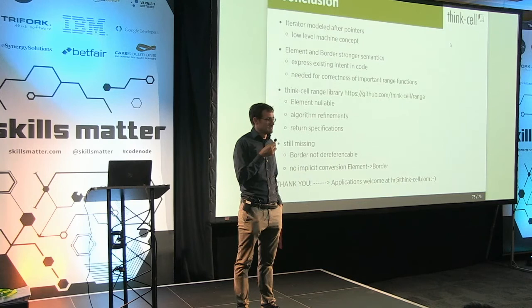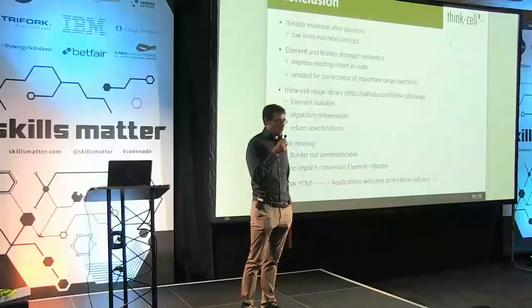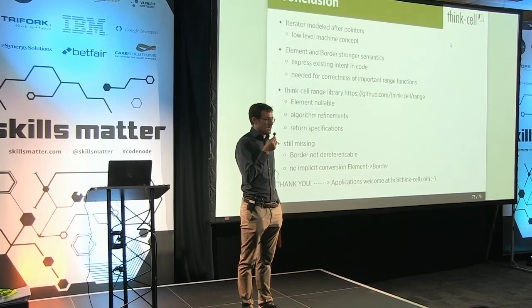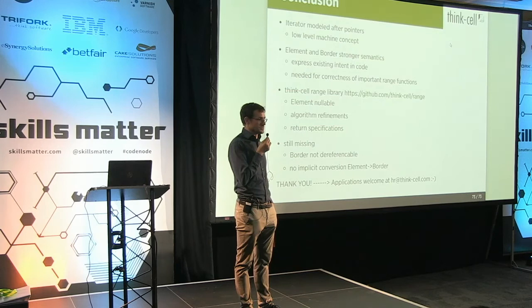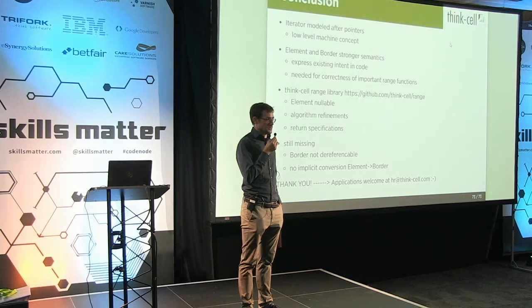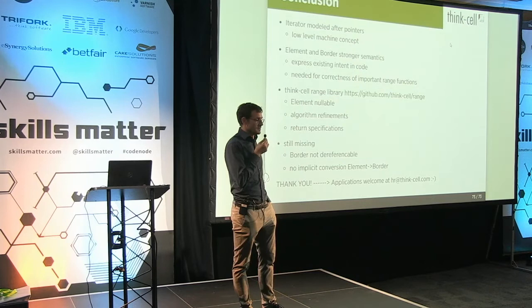I'm just wondering how elements and borders play with iterators in the same code base — is there a transition or is it all or nothing? Well, all that stuff is basically sugar. Borders as well as elements decay to iterators at any time if you like, so it's really just a specialization of iterators. I think it would not be a problem to have a mixed zoo of things — you could call a function returning an element and assign it to an iterator type, that's fine.